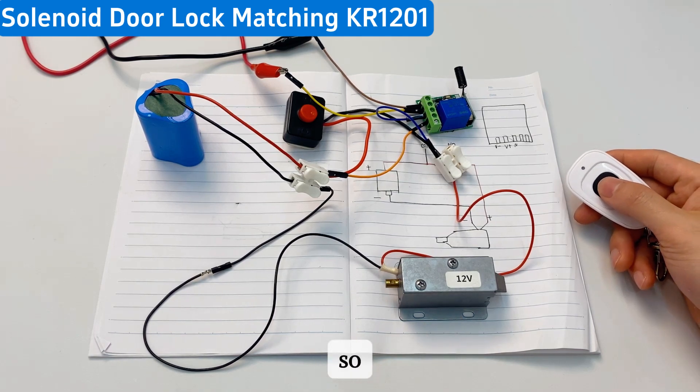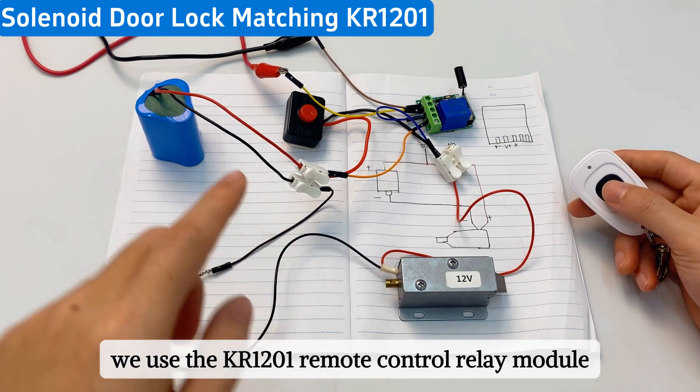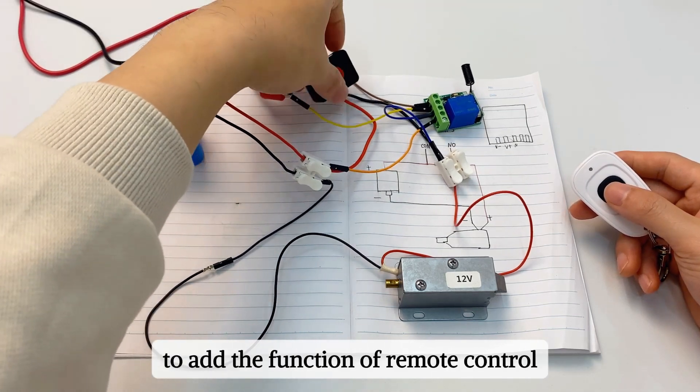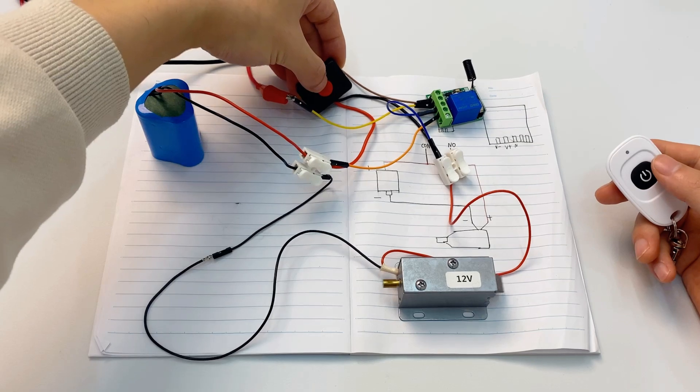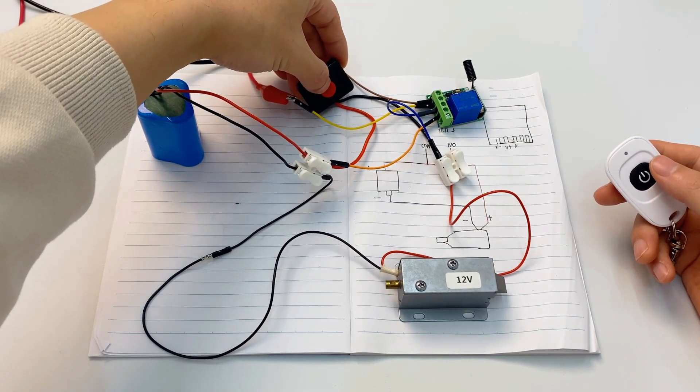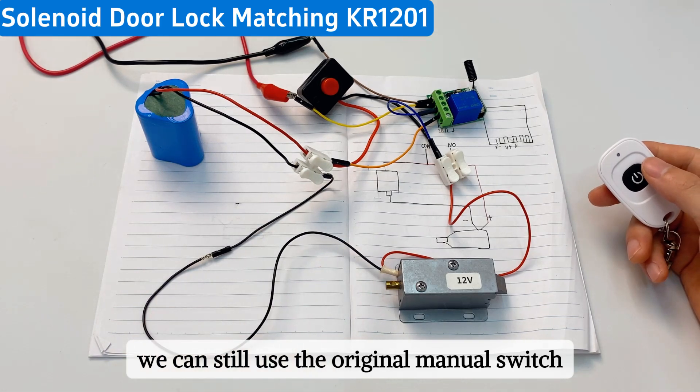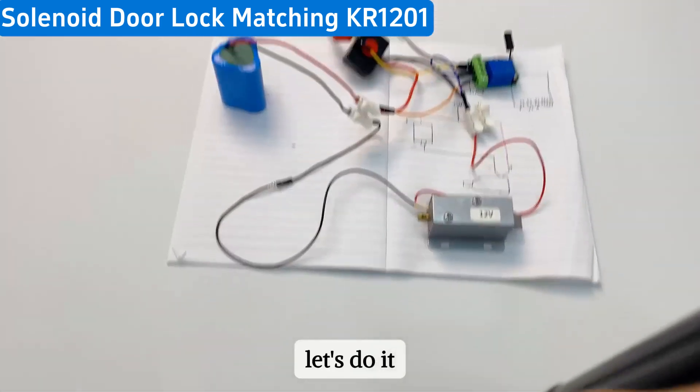So, we use the KR1201 remote control relay module to add the function of remote control. We can still use the original manual switch.